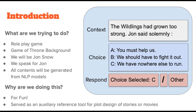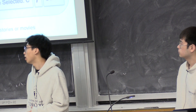What we're trying to do: we build a role-play game, and the background story will be Game of Thrones. During the game, we'll be Jon Snow and we'll speak for him. All the contents will be generated from NLP models. On the right, you can see we have contents and choices that will be generated from the model. In the response, it will be user inputs where you could choose from three options, or you could put your own words with the other option. This project is mainly for fun, or it could be served as an auxiliary reference tool for plot design.